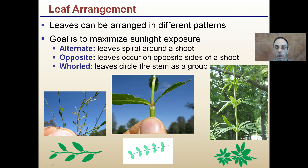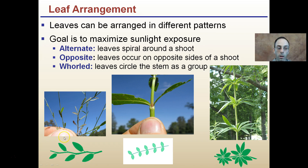How leaves are organized on the stem is another key factor you may not notice much, but when you start looking it can be interesting. The goal is to maximize sunlight exposure — this is why leaves are arranged in different patterns. Alternate is when leaves spiral around a shoot, alternating their pattern: left, right, left, right.